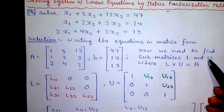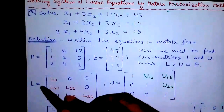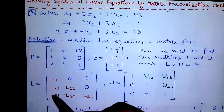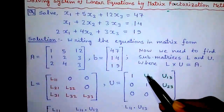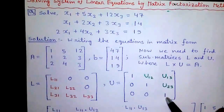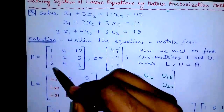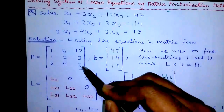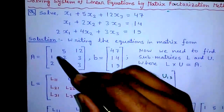Now we need to find two sub-matrices L and U where L into U equals matrix A. Remember, U into L is not equal to matrix A. L is the lower triangular matrix where values are in the lower triangle and upper triangular values are 0. U is the upper triangular matrix where values are in the upper triangle, lower triangular values are 0, and principal diagonal elements are all 1.